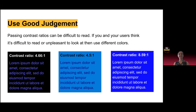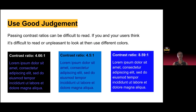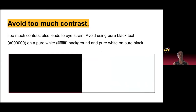Use good judgment — kind of like what we saw in that poll, passing contrast ratios can still be difficult to read. If you and your users have trouble reading something, push yourselves to figure out different color combinations. Within ASU and most brands, there are always challenges finding the best ratios that meet brand standards and color contrast compliance. But really when we're designing, developing, and putting content on the web, it's for everyone to use. Also avoid too much contrast — studies show that too much contrast can lead to eye strain. Avoid using pure black text on pure white backgrounds and vice versa.